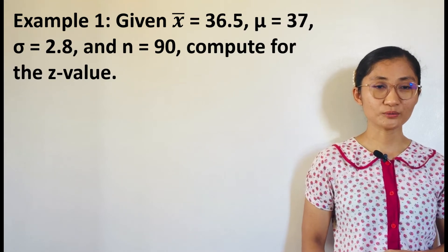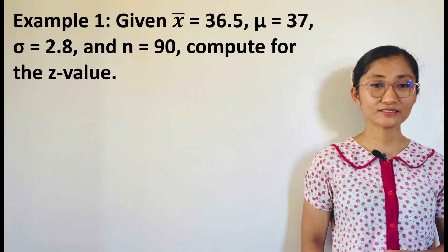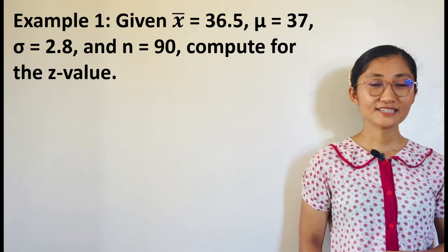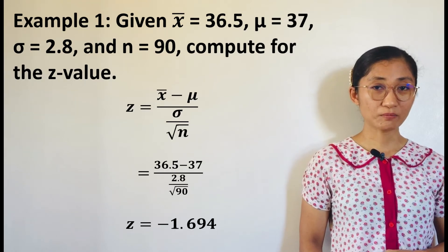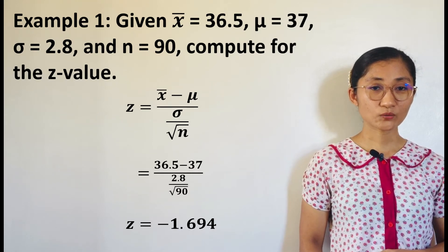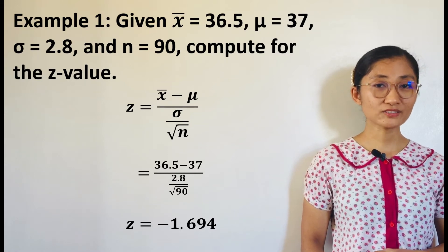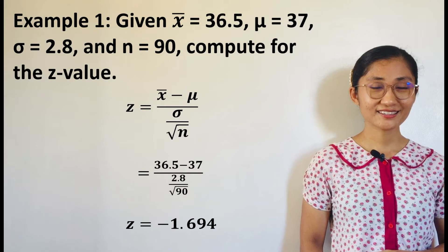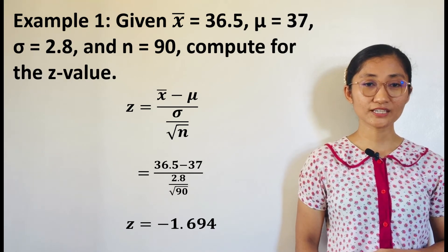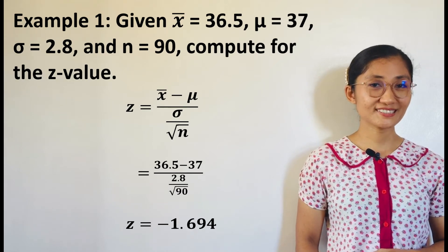Since n is greater than or equal to 30 and sigma is known, then we will use Z-test. That is, Z equals X-bar minus mu over sigma over square root of n. By substitution, we have 36.5 minus 37 over 2.8 over square root of 90. And using your calculator, Z-value is negative 1.694.